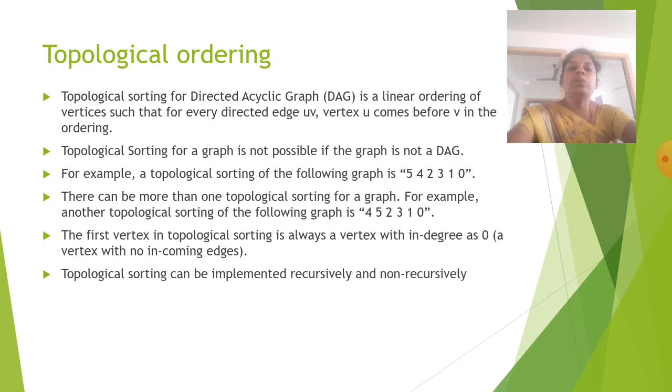There can be more than one topological sorting for a graph. For example, another topological sorting of the following graph is 4, 5, 2, 3, 1, 0. The first vertex in topological sorting is always a vertex with in-degree as 0. Topological sorting can be implemented recursively and non-recursively.